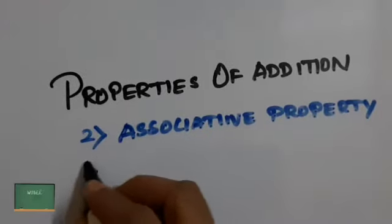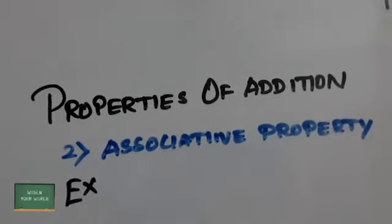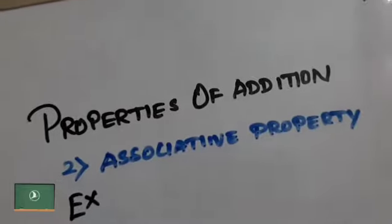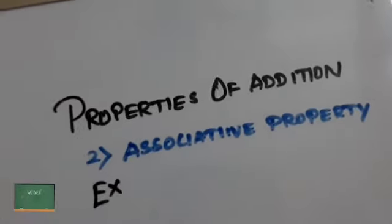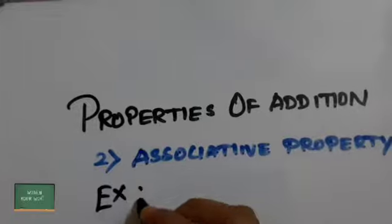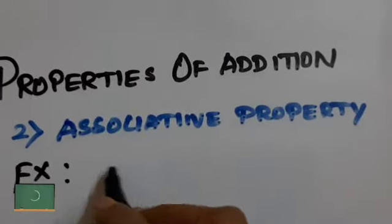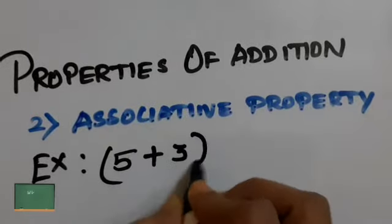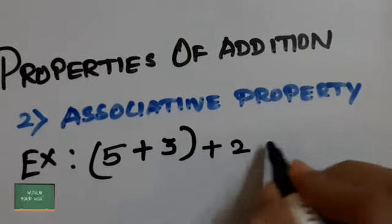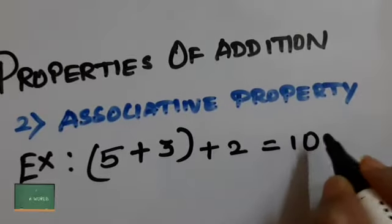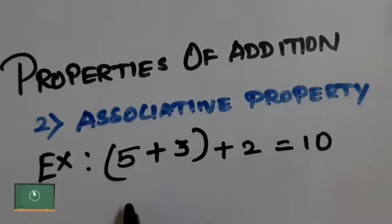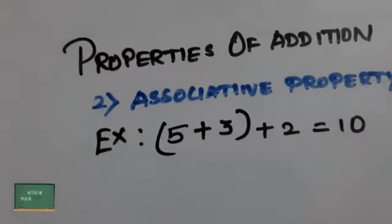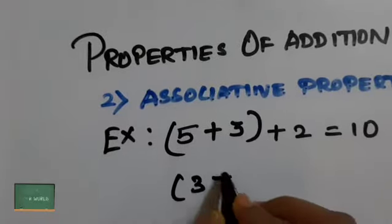The second property is the associative property. When you group two or more numbers in any way to add, their sum will remain the same. For example, 5 plus 3 plus 2 gives 10. If we interchange the numbers in the brackets and add in any manner, we will get the same sum. So 3 plus 5 plus 2 will also give the same sum, 10.